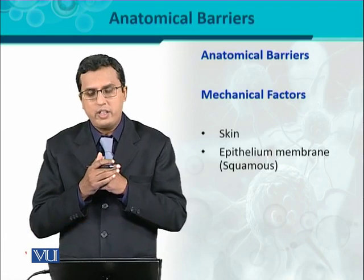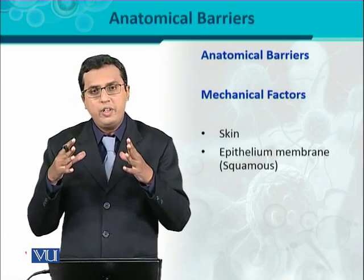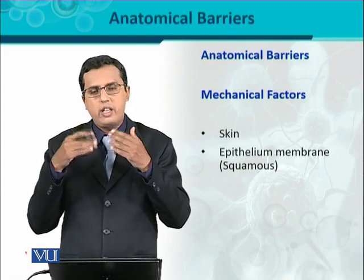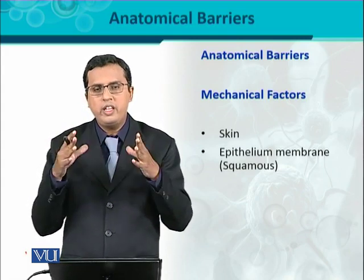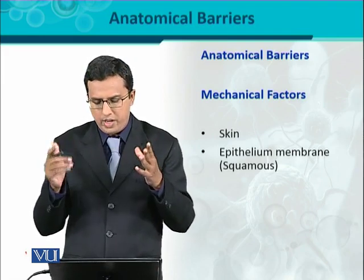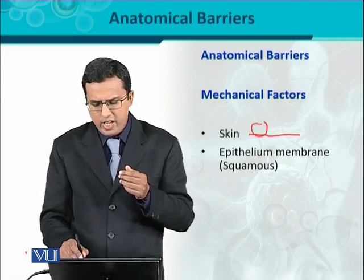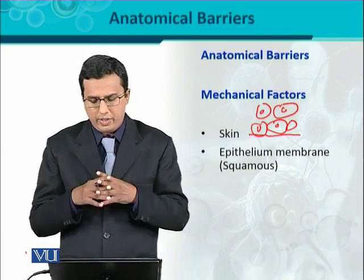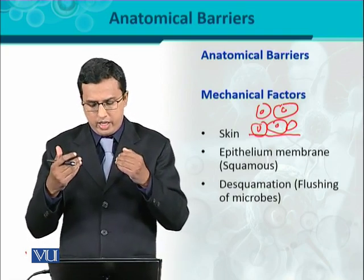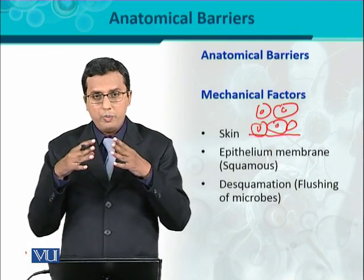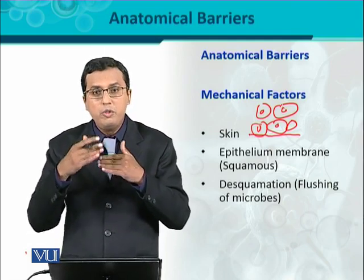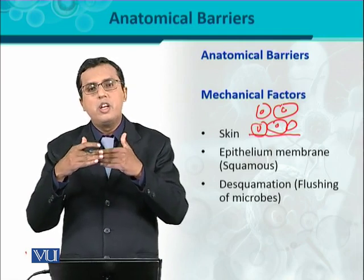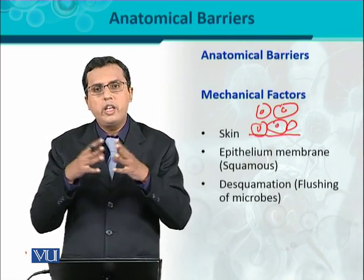The second mechanical factor is the epithelium membrane. Inside body cavities like the GIT and respiratory tract, a lining made of epithelial tissue is present in the form of layered cells, called squamous epithelium. When microorganisms attach to it, a flushing action occurs through a process called desquamation — the removal of the squamous membrane. If an infectious agent gets trapped in the superficial layer, that layer is removed via desquamation.